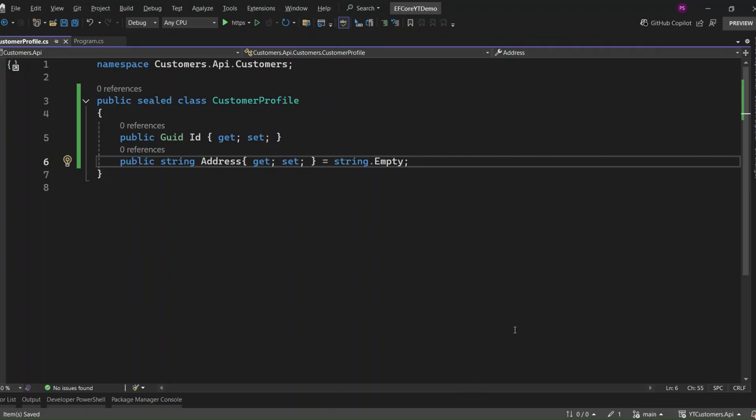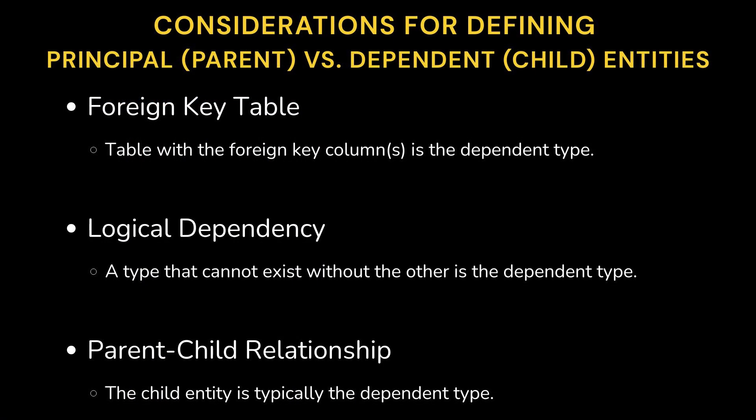It's not always obvious which side should be the parent and which side should be the child. Here are a few things to keep in mind. First, if the tables for both entities already exist in the database, the table that contains the foreign key columns should be considered the dependent type. Next, a type is usually the dependent if it cannot logically exist without the other type. It doesn't make sense to have a customer profile without a customer. So in this case, the customer profile is the dependent entity because the profile can't exist without a customer. Finally, if there's a parent-child relationship, the child is typically the dependent type. In our example, customer is the parent entity and customer profile is the child — that makes customer profile the dependent entity.